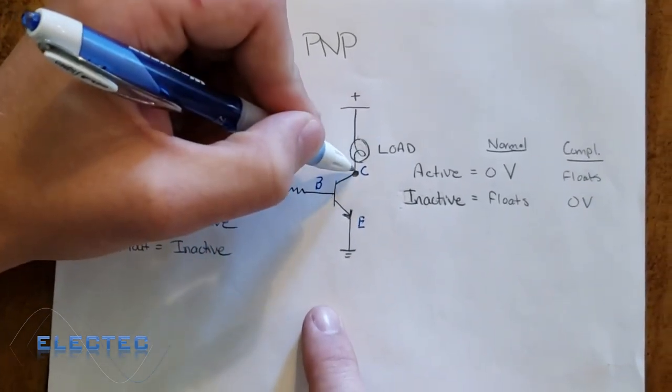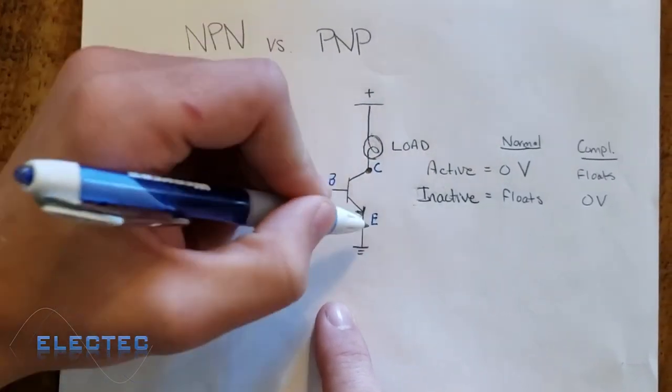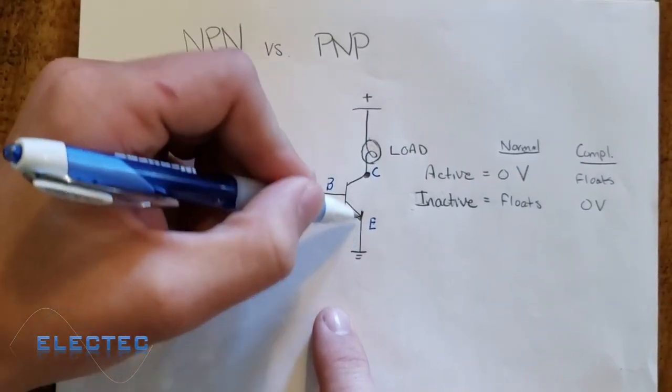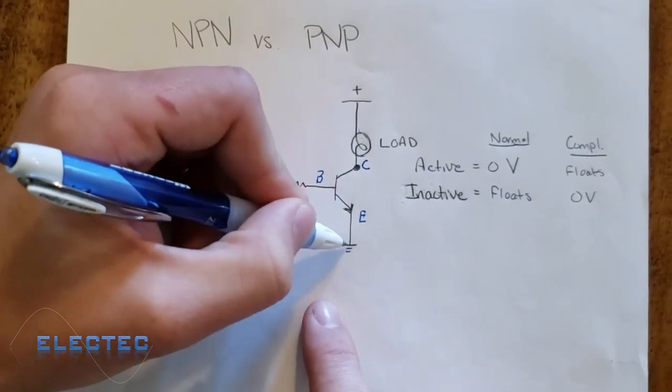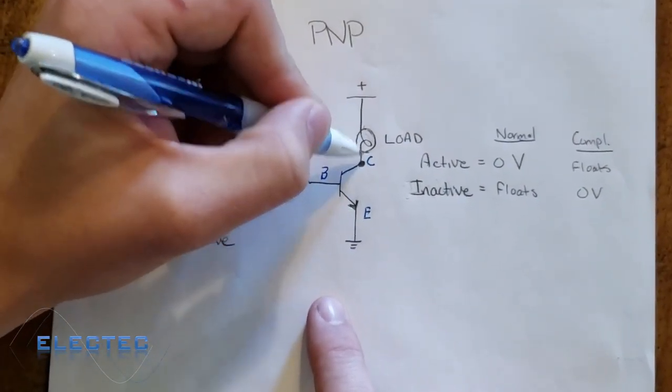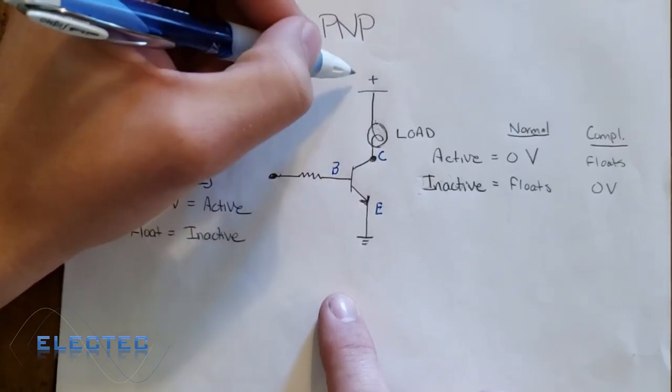And if you see what that did to our load, it essentially turned our load on. So the negative point is here now because this is connected. Our common is our negative right here. And the positive is another source, a voltage source.